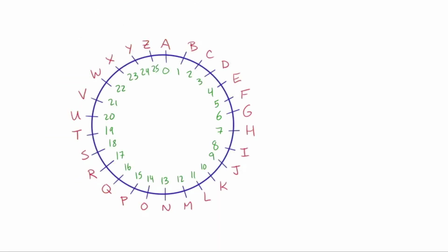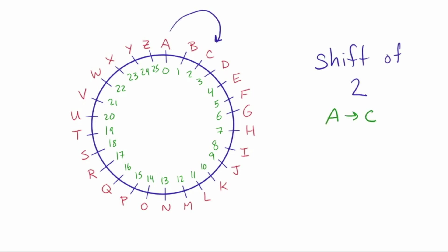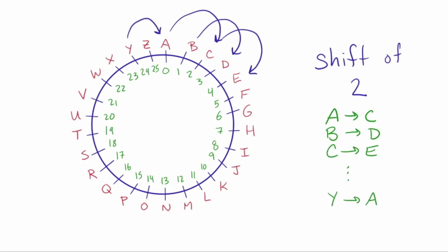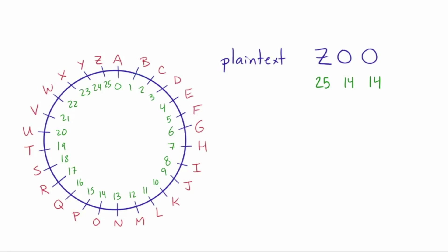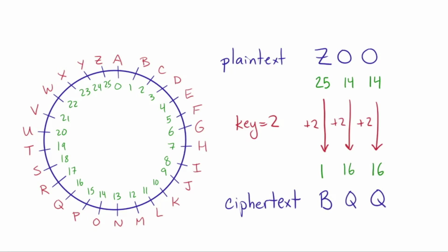For Caesar Cipher, each plain text letter — remember, plain text is the word for the unencrypted message — gets shifted some number of notches around the wheel to give the corresponding cipher text letter. So for example, if I'm using a shift of two notches, then A becomes C, B becomes D, C becomes E, and so on. Notice that Y becomes A because we're wrapping around, and Z becomes B. If our plain text is 'zoo,' in numbers 25, 14, 14, and our key is 2, then we add 2 to each. Then our cipher text — that's the word for the encrypted message — is B, Q, Q. In this Caesar Cipher situation, we fix a single shift, say two notches, which we can call C, because 2 is the number for C. So that's the key for the cipher.